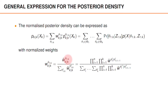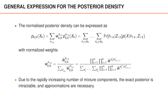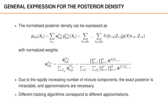The posterior weights can be normalized by dividing by the sum of weights, and this gives us the general expression for the posterior density. We have a sum over the different data associations at all time steps, the probability of the data association, and then the posterior conditioned on the data association and the measurements. Due to the rapidly increasing number of mixture components because of the data association, the exact posterior is intractable and approximations are therefore necessary. Different tracking algorithms correspond to different approximations of this posterior density.